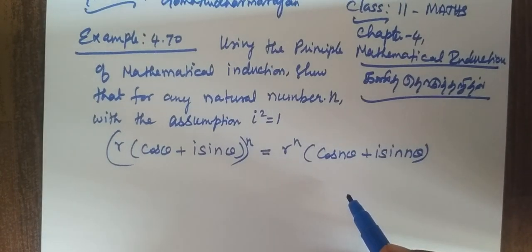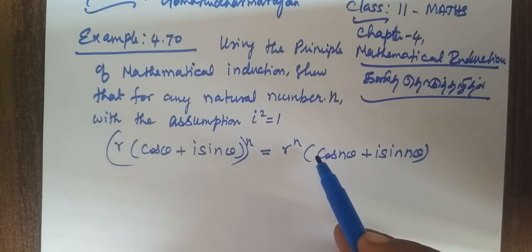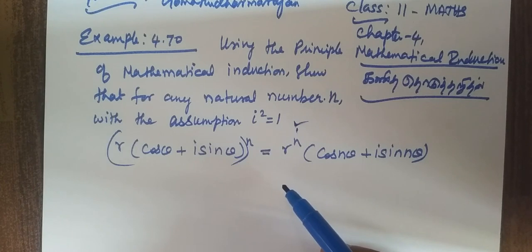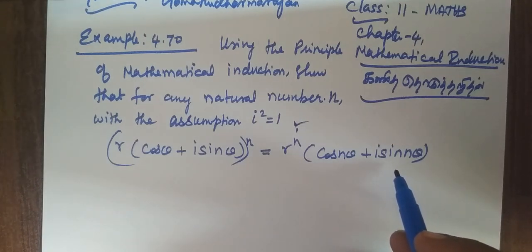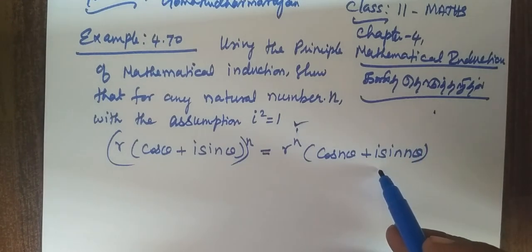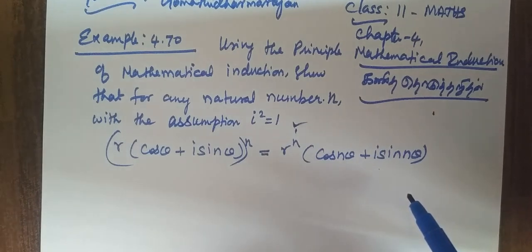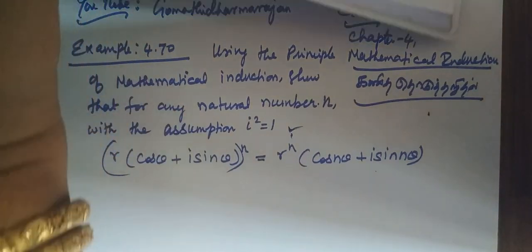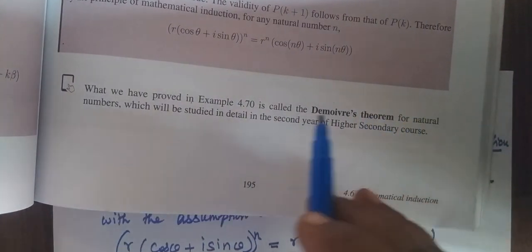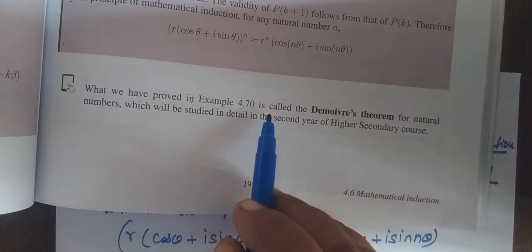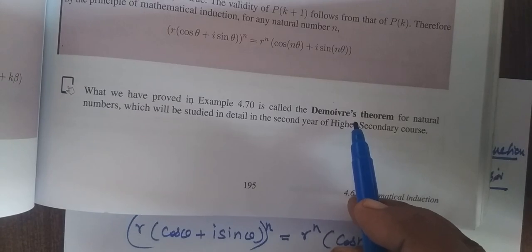Now we have to look at the 11th math example 4.70. Using the principle of mathematical induction, we show that for any natural number n, with the assumption i squared equal to negative 1, we are proving r bracket cos theta plus i sine theta whole power n equal to r power n, then cos n theta plus i sine n theta. This example 4.70 is called De Moivre's theorem.